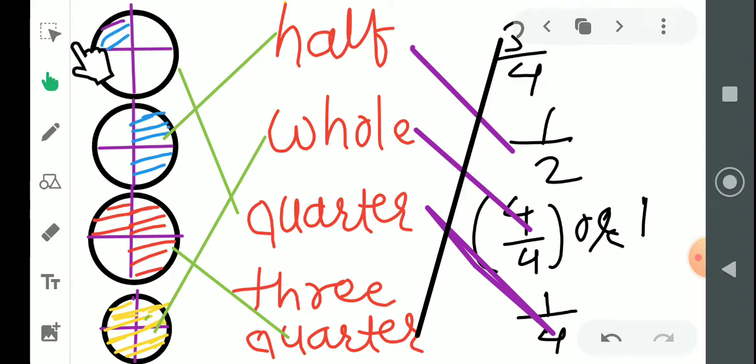This is a circle divided into four equal parts, and we have colored only one. So we call it one-fourth, also called a quarter. Similarly, one by two we can say half, and one by four we can say quarter.